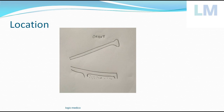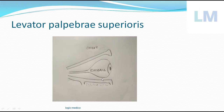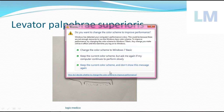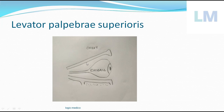To understand this in depth, let us go step by step. This is a conical structure called the orbit — we have two orbits. On sagittal section, this is the facial surface of the orbit, the base of the cone, and this is the apex of the cone directed towards the posterior aspect. To understand the origin, insertion, and action of this muscle in detail, a little bit of orientation is required with respect to certain structures.